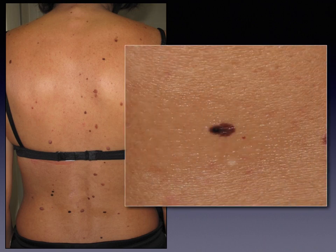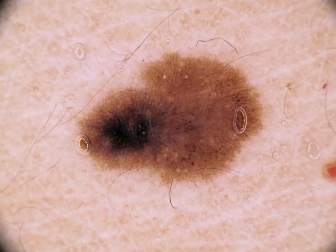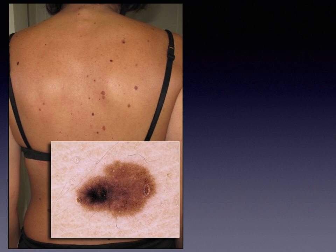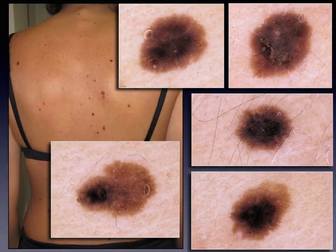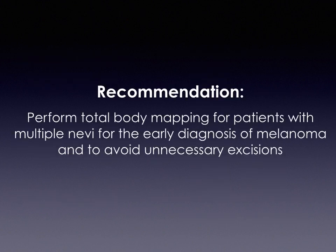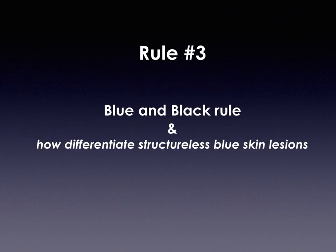Clinically, one asymmetric nevus may appear suspicious for melanoma, and dermoscopically you can see a brown network, dots, and a blotch on the left side. However, comparing it with the other nevi shows it is not so different — the comparative approach outweighs the analytic approach. The recommendation is to perform total body mapping for patients with multiple nevi for early melanoma diagnosis and to avoid unnecessary excisions.